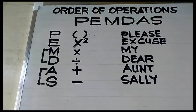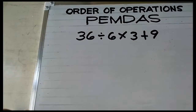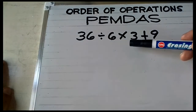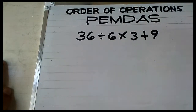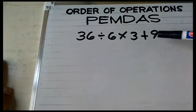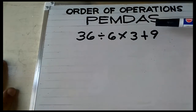So let's do some examples. We have: 36 divided by 6 times 3 plus 9. First, check — do you have parenthesis? No. Do you have exponent? No. Do you have multiplication? Yes. Do you have division? Yes.